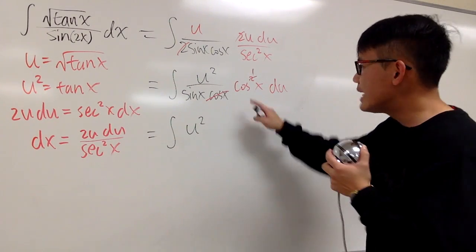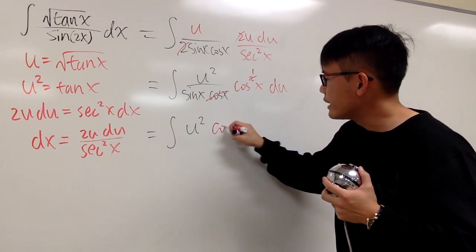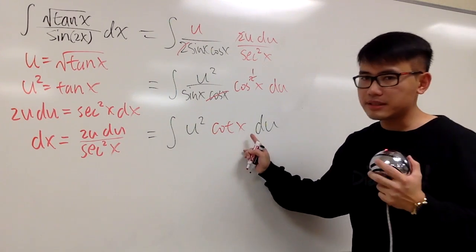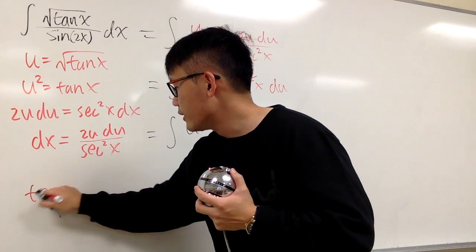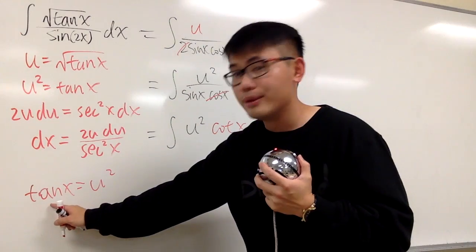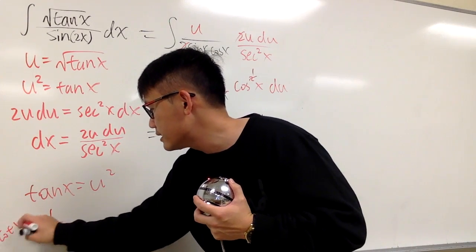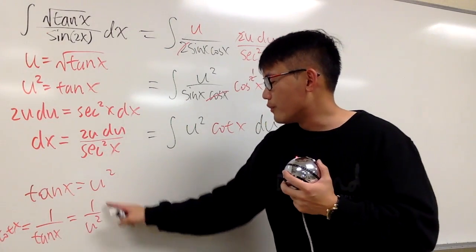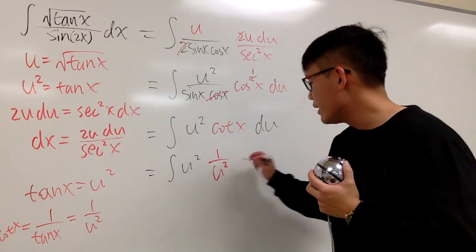Here we have cosine x to the first power. Cosine x over sine x is cotangent x — but cotangent x is not allowed in the u world. Let's look at this: u squared is equal to tangent x. We know that cotangent x is 1 over tangent x, which equals 1 over u squared. So cotangent x is just 1 over u squared. This gives us the integral of u squared times 1 over u squared, du.